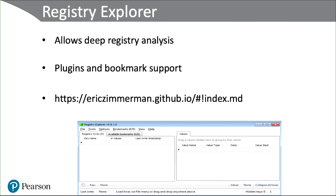Here's a screenshot I took of Registry Dumper. You can see where to download this program — it has a GitHub.io site. It lets you bring in external bookmarks and external plugins. By external bookmarks, I mean it lets you save a place in the registry for examination that you may want to go back to later, so you don't have to navigate the entire hive or tree structure. You can mark things and say, I'll look at this section later. So it does allow for deep registry analysis.